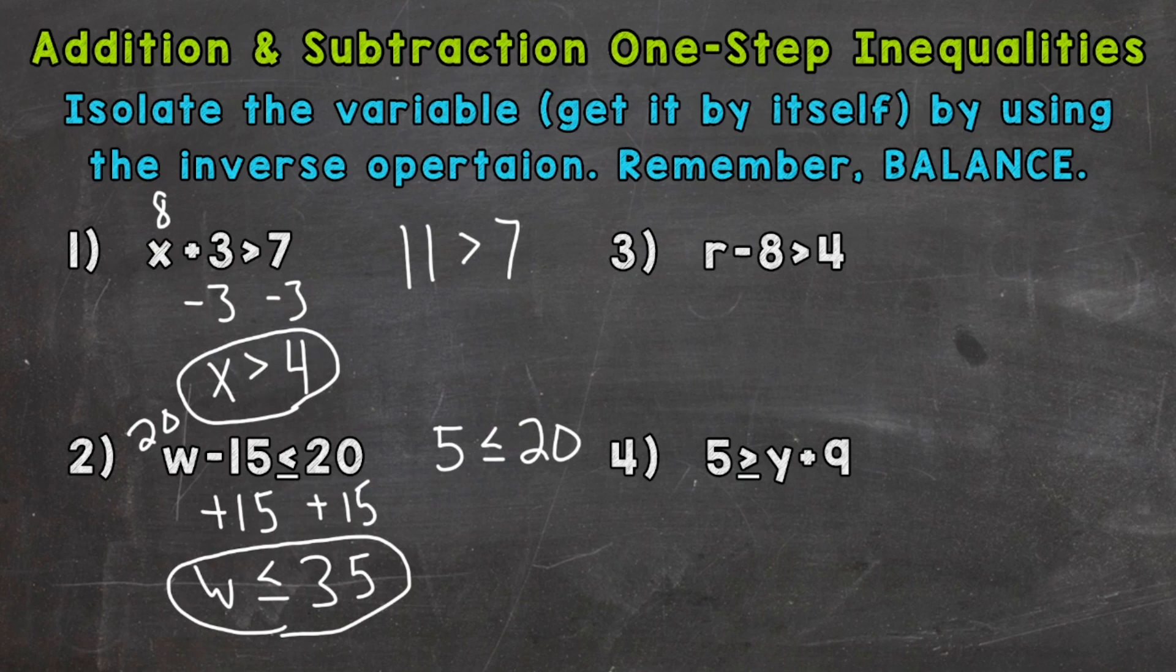On to number 3, where we have r minus 8 is greater than 4. So we're subtracting 8. The opposite or inverse would be to add 8. That's going to isolate our r. Do it to the right side as well. And we end up with r is greater than 12. So any number greater than 12 would be a solution to that inequality.